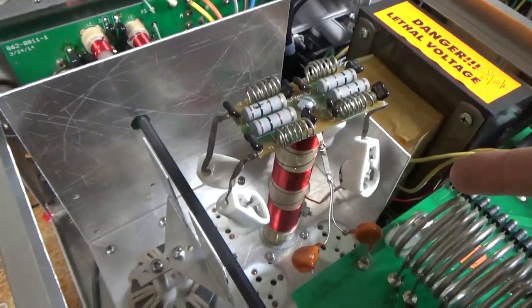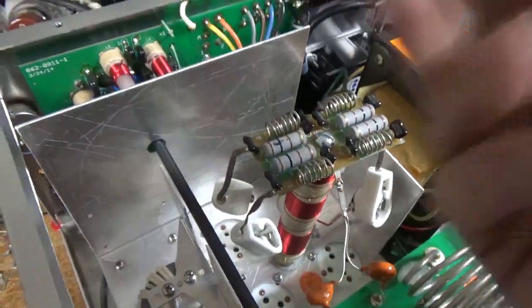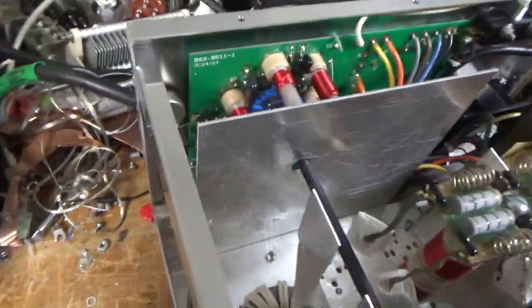I have the gas discharge tubes at the base of the sockets. 10 meter mod. Needs new SO239s. Again, there's the output. So I had it mixed last time. This is the output, input, output, input, output, input.